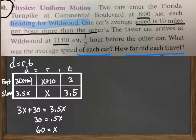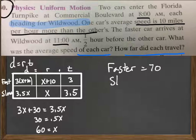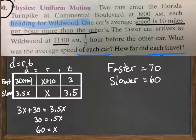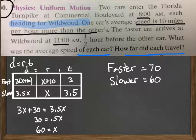Now, remember, x was the speed of the slow car. So the first question was, what was the average speed of each car? Well, the faster car was 10 miles faster, so it would be 70 miles per hour. Slower car was going 60 miles per hour. The final question is, how far did each car travel?